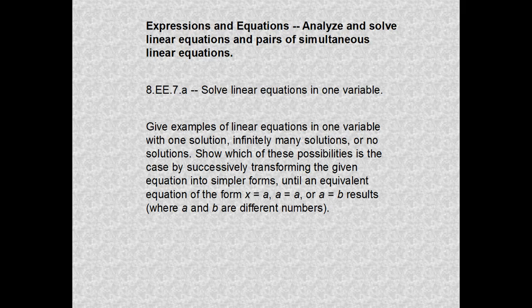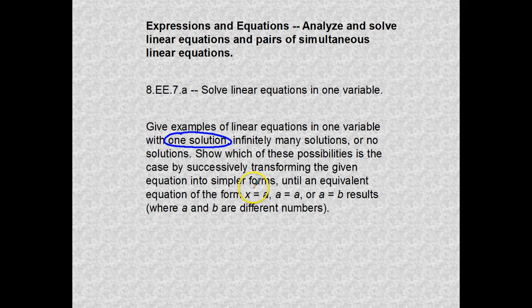When solving linear equations with one variable, there are three things that could occur. The first is that there's only one answer from the number line that would work — we call that one solution, and it's recognized as X equaling A, where X can only be one possible answer.